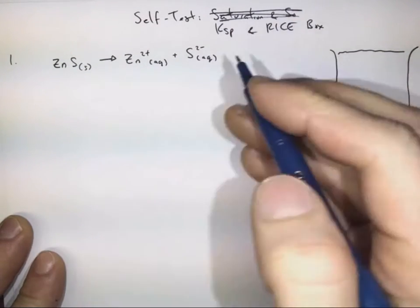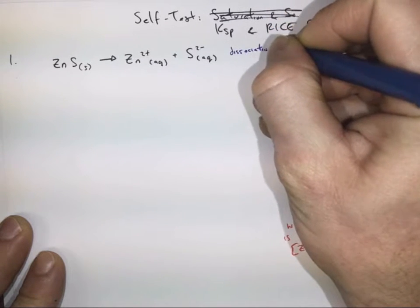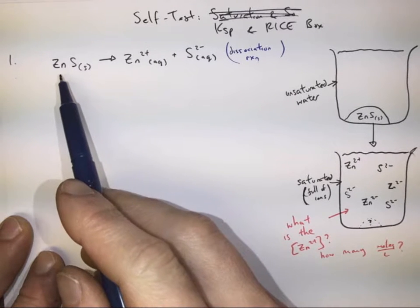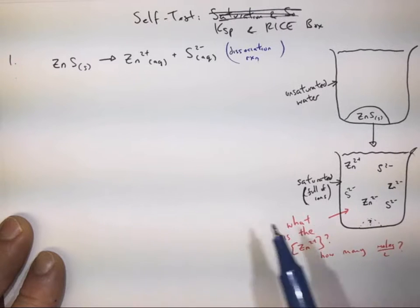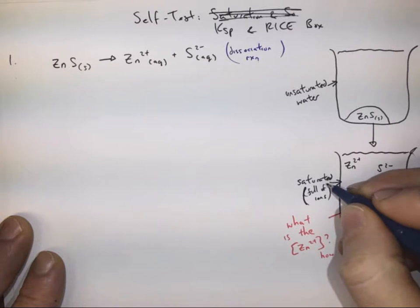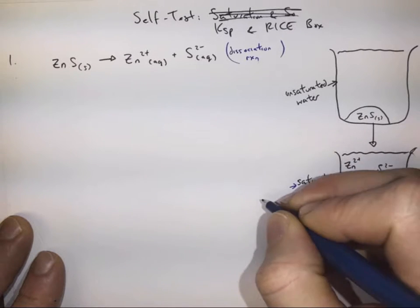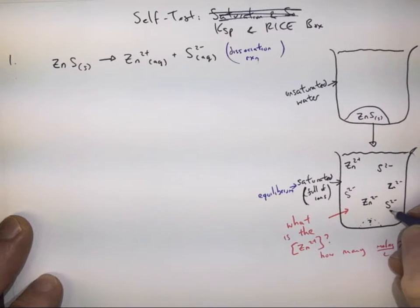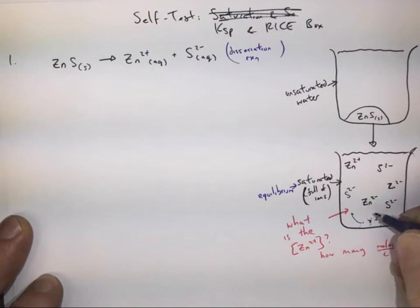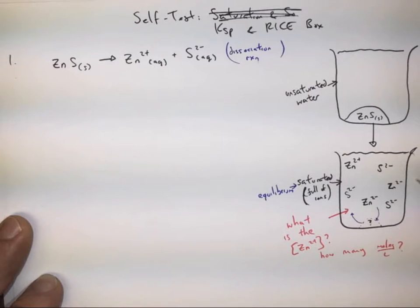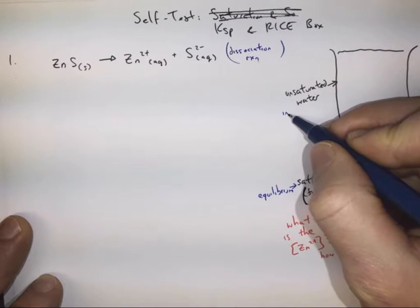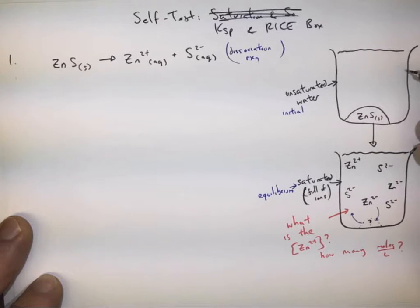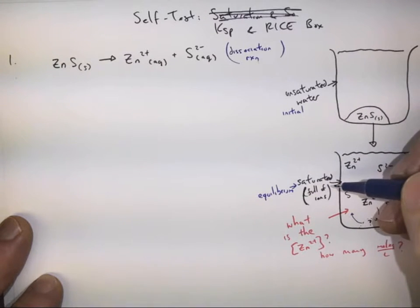This is a dissociation reaction — describing the dissociation of solid zinc sulfide into ionic zinc sulfide. We want to know something about a saturated solution, and saturated means equilibrium. A saturated solution is at equilibrium, meaning there's an equal number of zinc sulfide ions combining to form zinc sulfide as there are zinc sulfide solids making zinc sulfide ions. When we're comparing an initial condition to an equilibrium or saturated condition, we know we need a rice box.